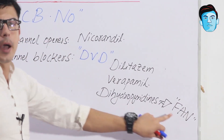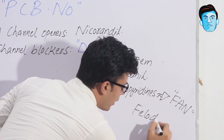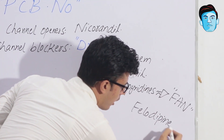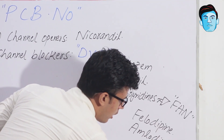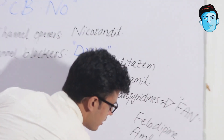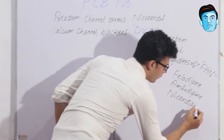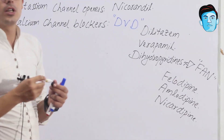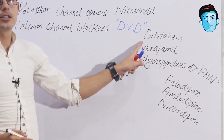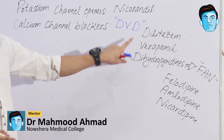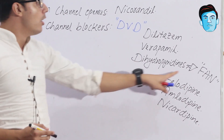In the FAN mnemonic for dihydropyridines: F stands for Felodipine, A stands for Amlodipine, and N stands for Nifedipine. To repeat: calcium channel blockers use DVD — D for Diltiazem, V for Verapamil, and D for Dihydropyridines, which contain FAN: Felodipine, Amlodipine, and Nifedipine.